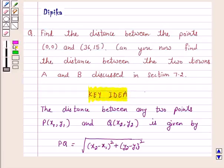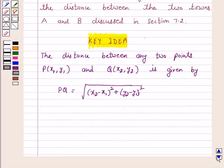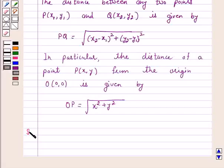So let's start the solution. Let O(0,0) and P(36,15) be the given points.